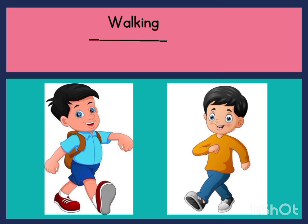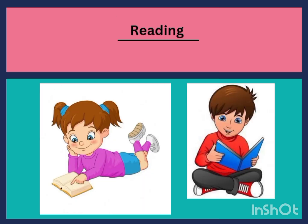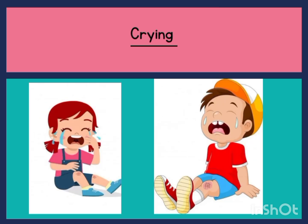Reading — you could see they are performing an action here, and the action is reading. Reading is an action word. Crying — they are performing an action and they are crying. The boys are crying, the girl is crying. Crying is an action word.